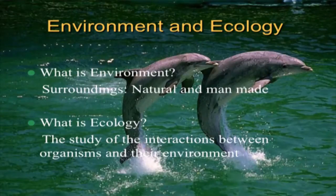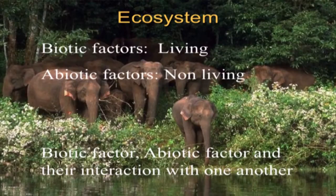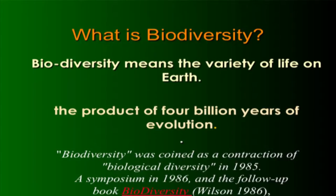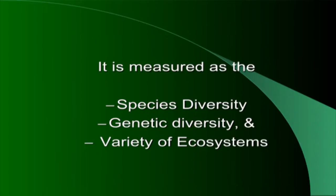The next module is on biodiversity. We have already studied what is environment, ecology, biotic and abiotic factors. Biodiversity is the variety of life on earth, and it is a product of evolution over 4 billion years, which we are rapidly destroying. It can be measured through species diversity, genetic diversity, and variety of ecosystems.